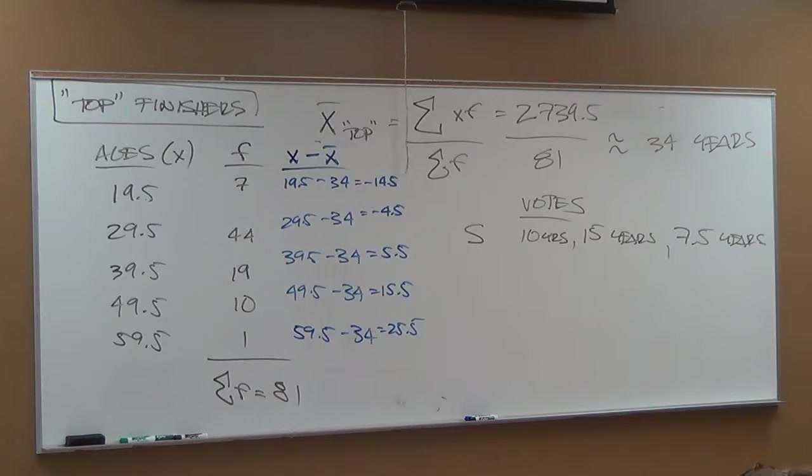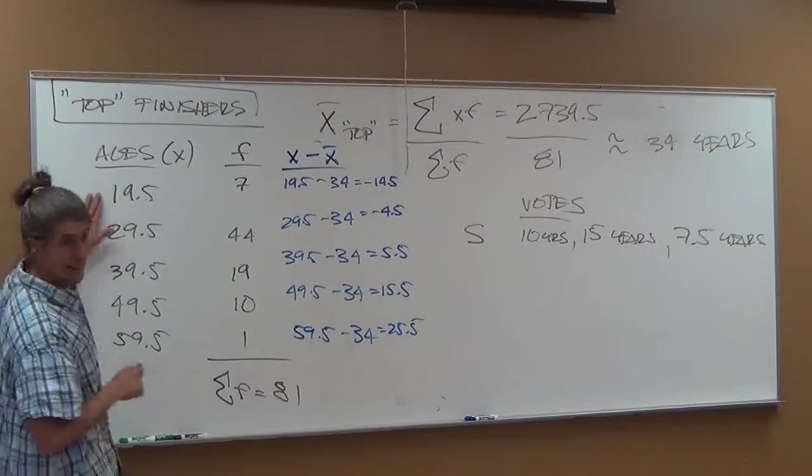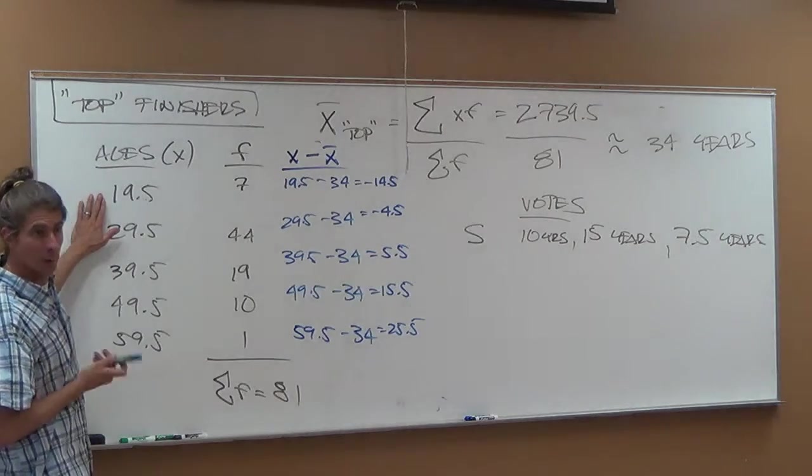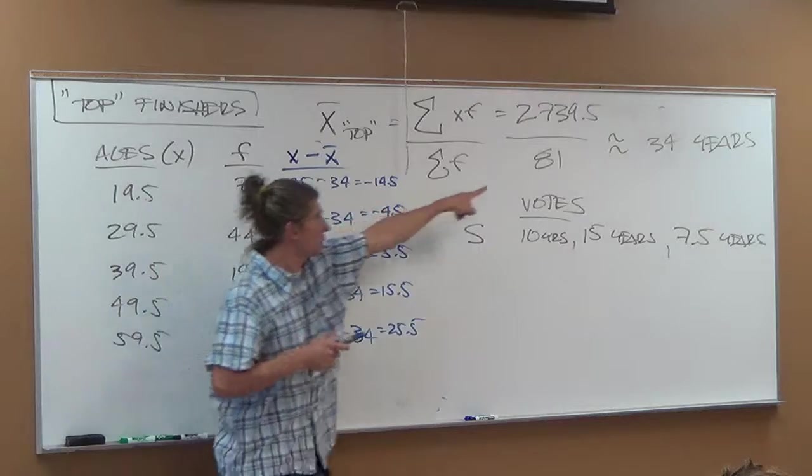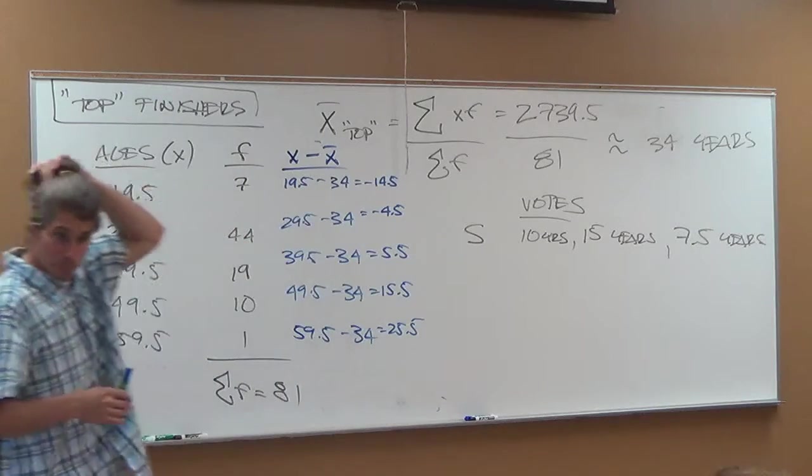What are those numbers again? How's the distance from average. Average difference. Negative means they're below average, positive means they're above. So obviously the 19.5 year old kids that are running this thing are below average. That's how far below average they are, 14.5 years below the average of 34.